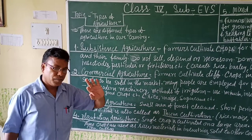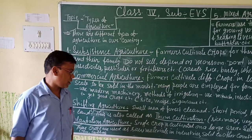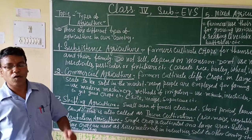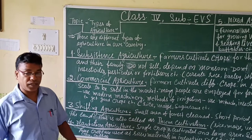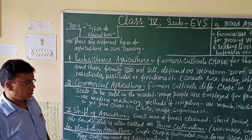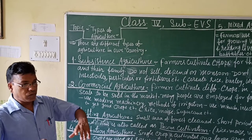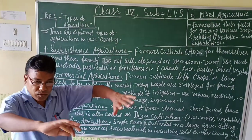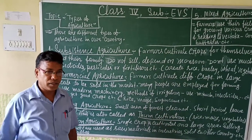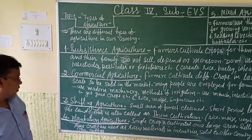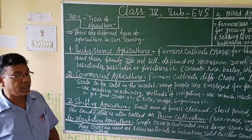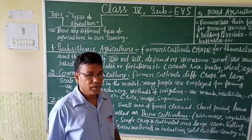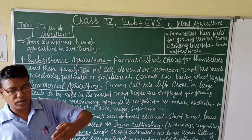Now we move to the fourth point: plantation agriculture. In plantation agriculture, a single crop is cultivated on a large scale for selling purposes. It is not different types of crops — only a single crop is cultivated, but on a large scale. The crops are used as raw materials in industries and sold to other countries.